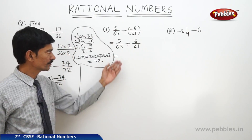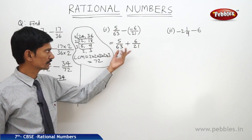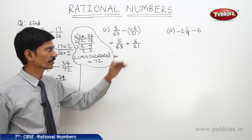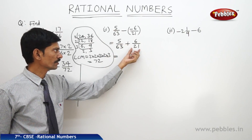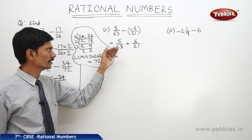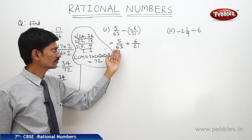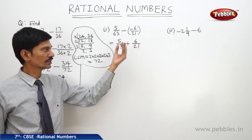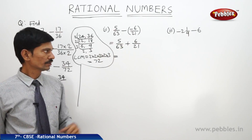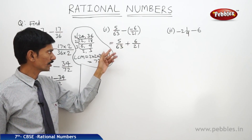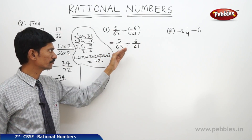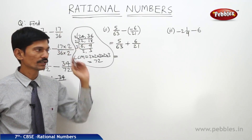If you observe the denominators, 63 is the multiple of 21 — 21 threes are 63. So when one number is a multiple of another, the bigger number is the LCM. Therefore, the LCM of the denominators 63 and 21 is 63.